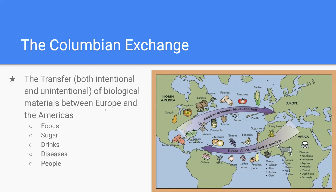The last big thing for this lecture is the Columbian Exchange — the transfer, both intentional and unintentional, of biological materials between Europe and the Americas. There's a picture here that gives you an idea of what is being traded. A big one is food: the potato, which you've probably had in the past 24 hours, was originally from South America and became the biggest crop in both Germany and Ireland. Corn was from Central America.